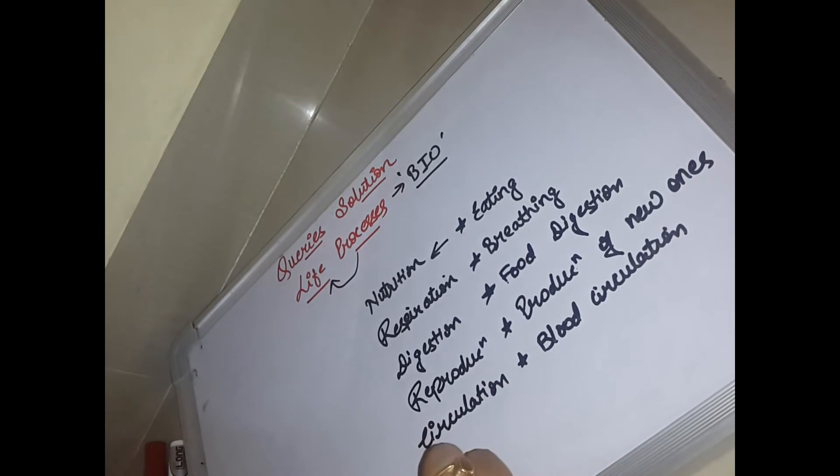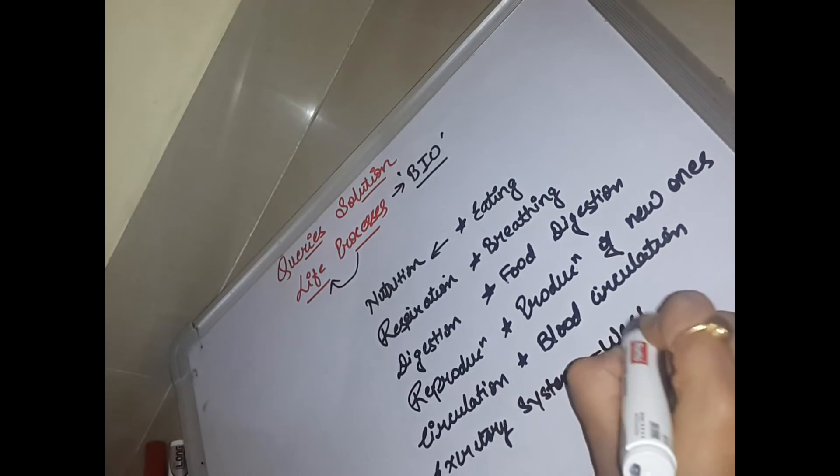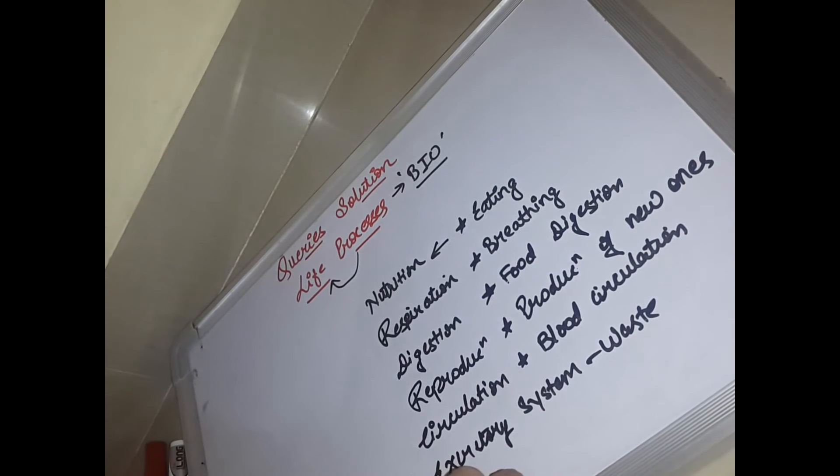Let me give you one or two examples like excretory system, right? We can also say nervous system.